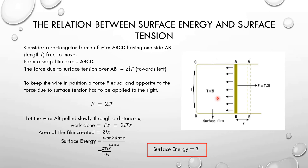The force due to surface tension will pull side AB towards the left. The surface tension is defined as T is equal to F by L. So the force due to surface tension F is equal to T into L.